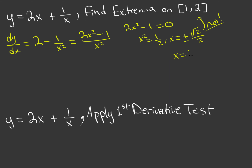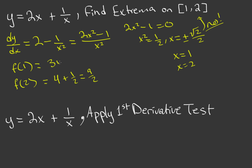The only points we can consider for extrema are the endpoints x = 1 and x = 2. Evaluating: f(1) = 3 and f(2) = 4 + 1/2 = 9/2. So x = 1 gives our minimum and x = 2 gives our maximum on this interval.